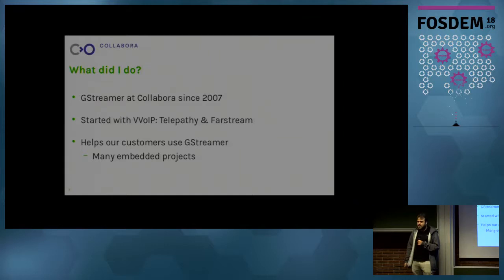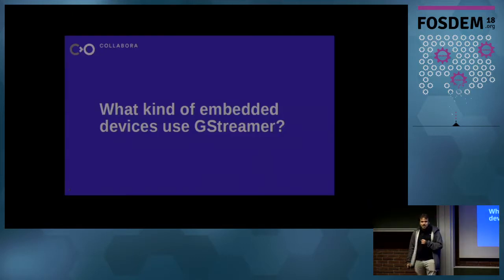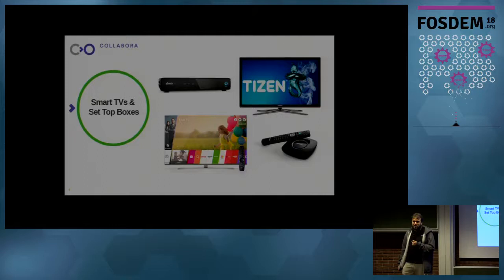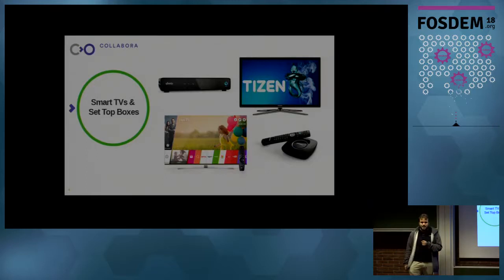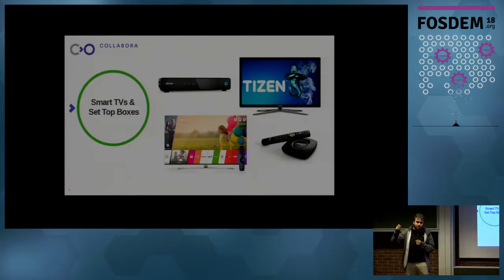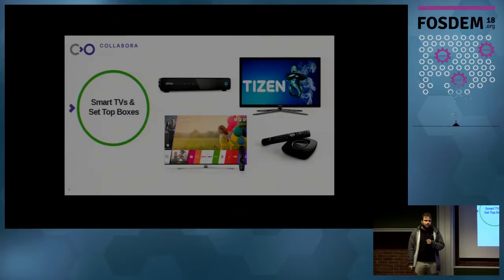What kind of embedded devices use GStreamer? A lot of people have built them, but many more people use them and have never heard that they were using GStreamer. One of the most common ones are TVs and set-top boxes. Probably the biggest GStreamer users on the planet are Samsung and LG TVs — all their smart TVs use GStreamer for internet television. Also, Comcast's Xfinity box, the biggest cable company in the US, builds its own open source stack and all media tasks go through GStreamer.